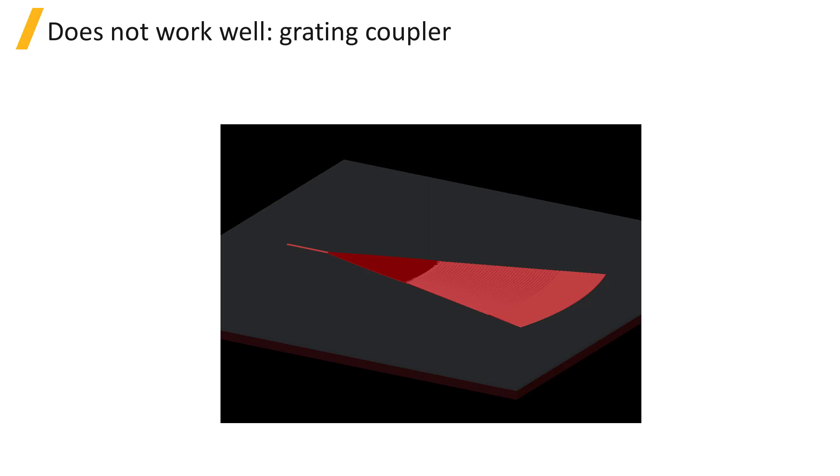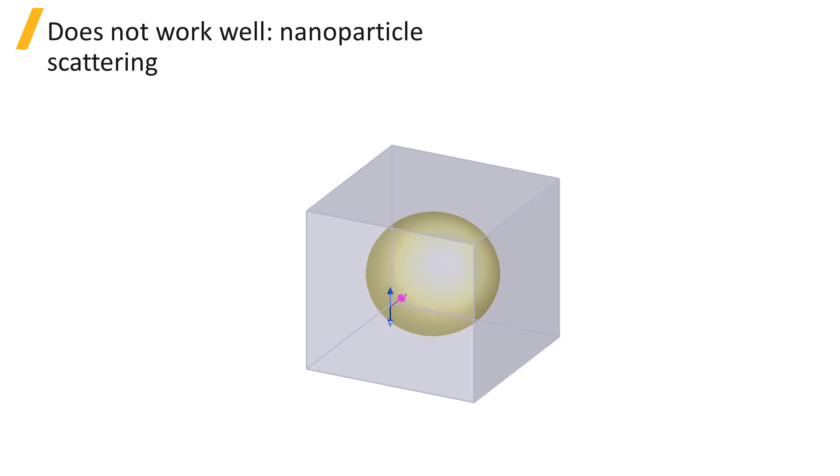Grating couplers which couple light into or out of the x-y plane in the vertical direction cannot be simulated since the light should be traveling in plane. Nanoparticles which scatter light in three dimensions cannot be simulated for the same reason that the method does not support light propagating out of the x-y plane.